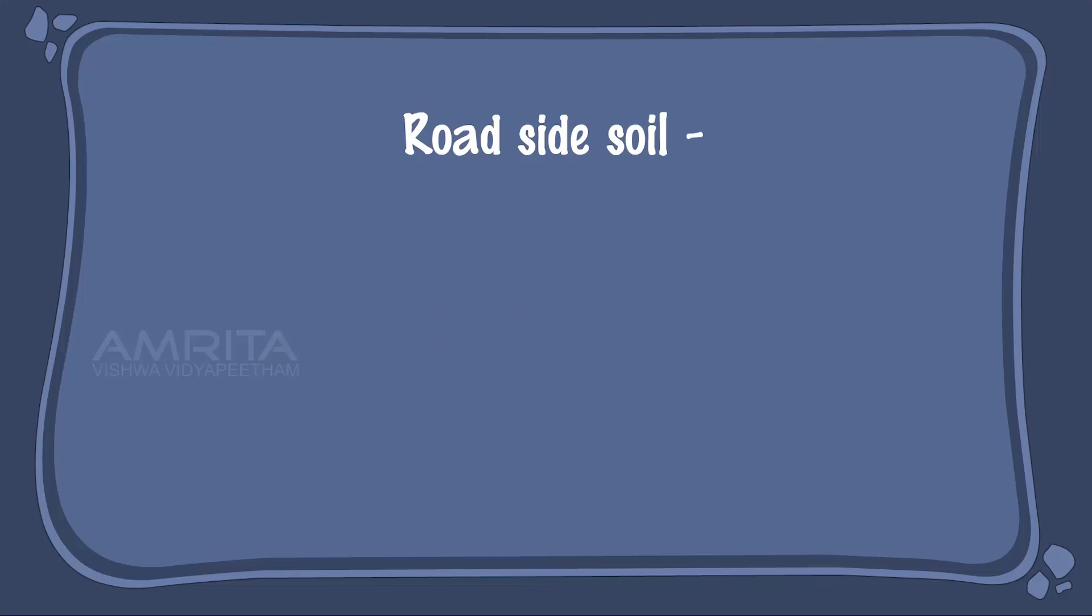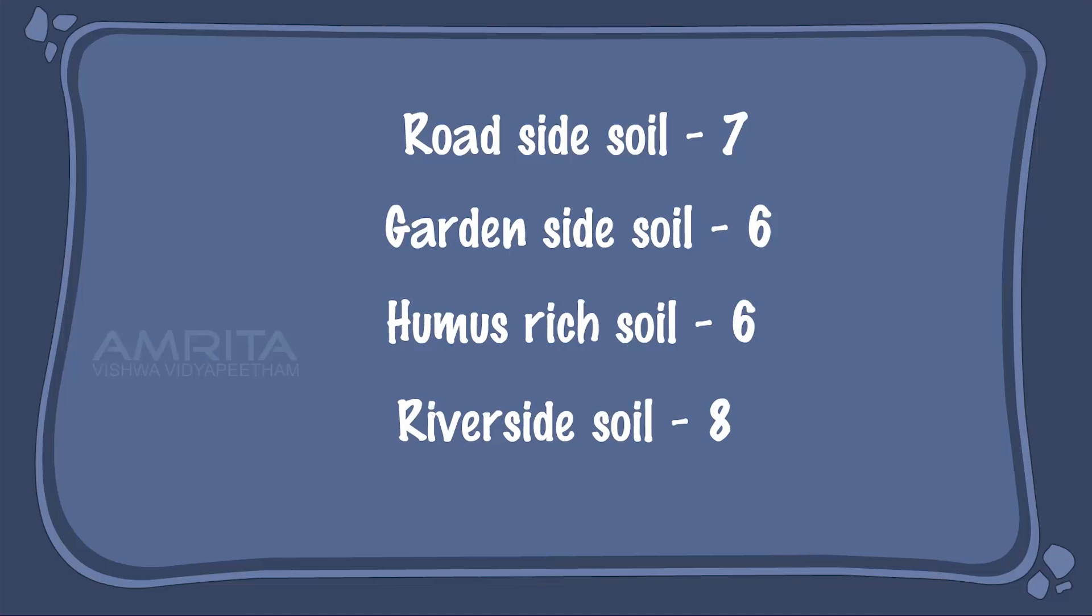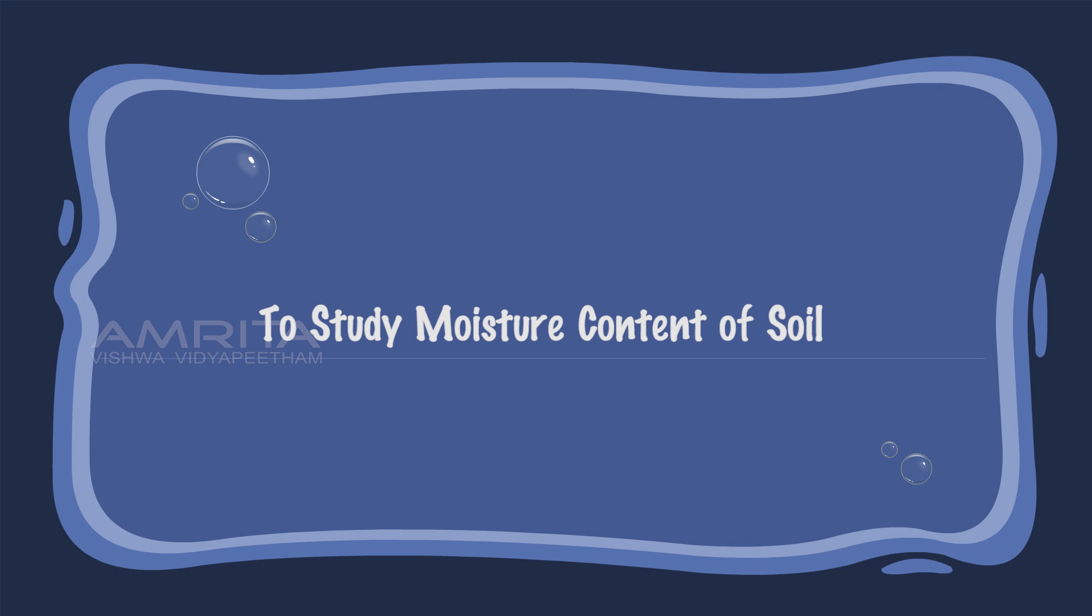We can observe that the roadside soil has pH 7, garden soil and humus rich soil have pH 6, and riverside soil has pH 8 to study moisture content of soil.